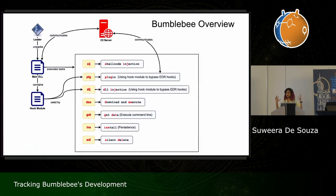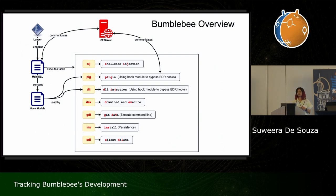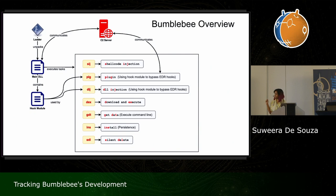Let me give a high-level overview of what the malware looks like when it infects a system. As with most e-crime malware, it starts off with a loader that is packed and encrypted, which unpacks our malware. In Bumblebee's case, it is always a DLL file. Once unpacked, Bumblebee communicates with the server to receive commands — they refer to them as tasks, abbreviated as three-letter strings.